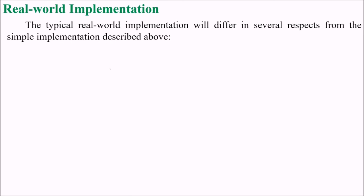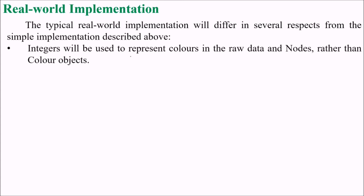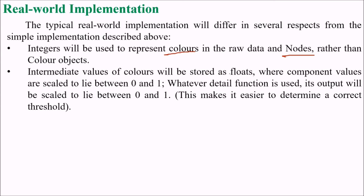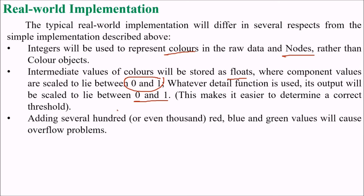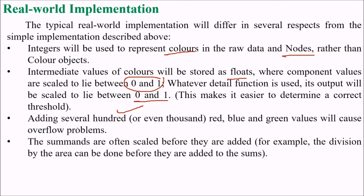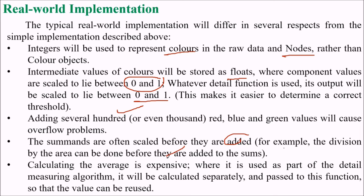A typical real-world implementation may differ in several aspects. Integers will be used to represent colors in raw data and nodes rather than color objects. Intermediate color values will be stored as floats scaled between 0 and 1, and the detail function output will also be scaled between 0 and 1, making it easier to determine the correct threshold. Adding several hundred or thousand color values can cause overflow, so summands are often scaled before being added — for example, dividing by area before summing. Calculating the average is expensive, so where it is used as part of the detail function, calculate it separately and pass it to avoid redundant computation.